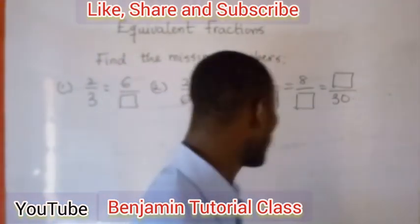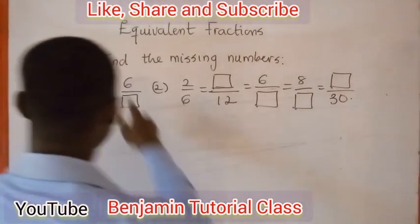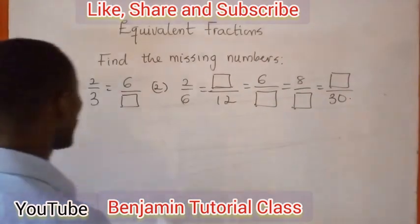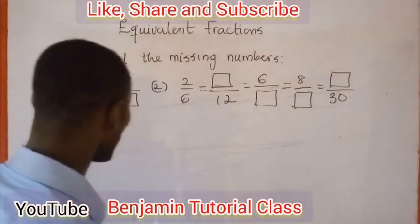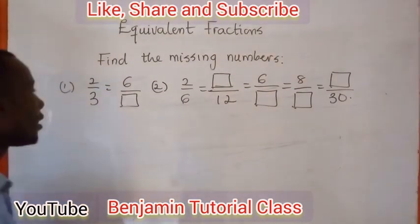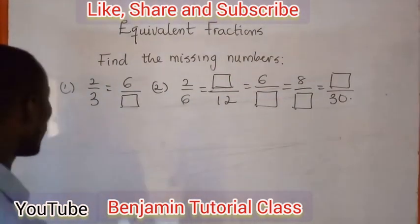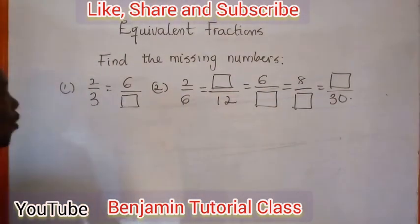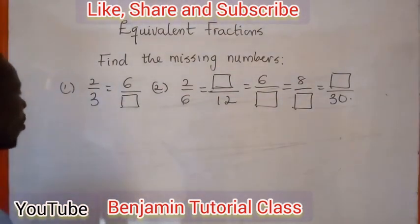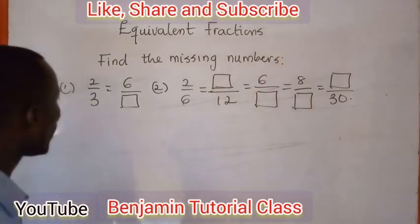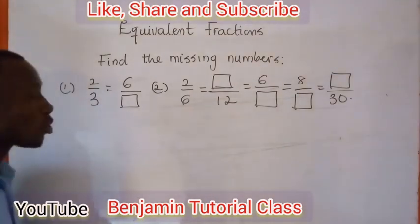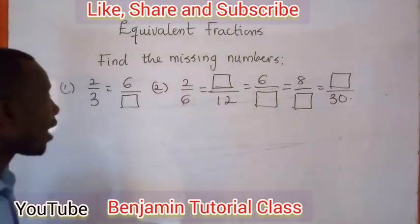Now let's consider the problem. Find the missing numbers: 2 over 3 equals 6 over box.